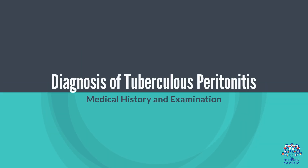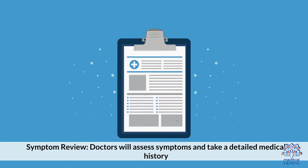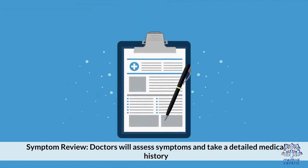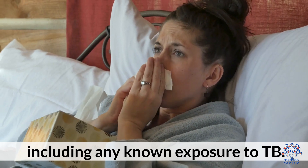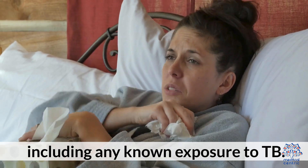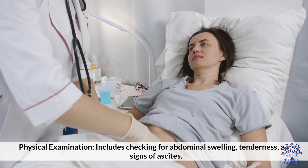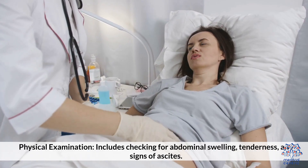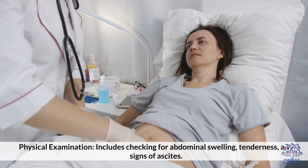Diagnosis of Tuberculosis Peritonitis: Doctors will assess symptoms and take a detailed medical history, including any known exposure to TB. Physical examination includes checking for abdominal swelling, tenderness, and signs of ascites.